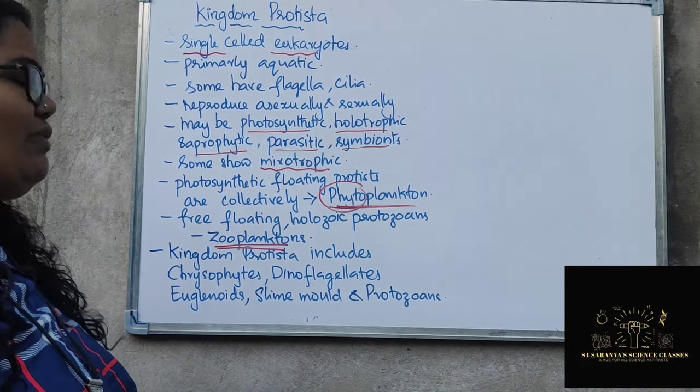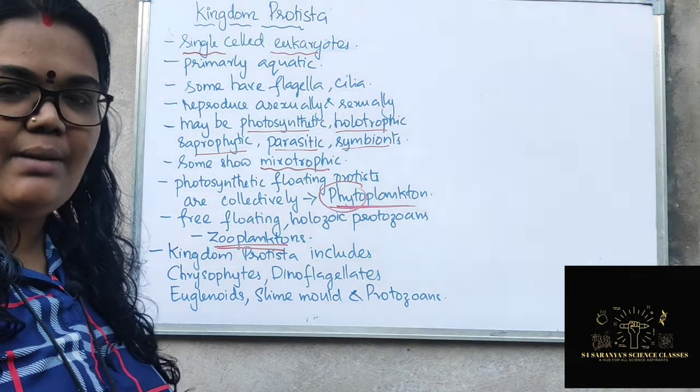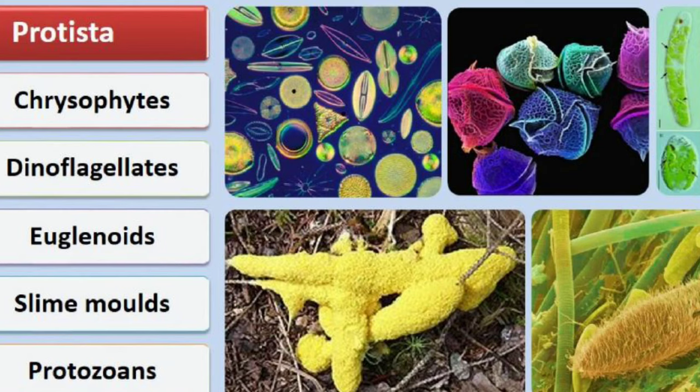Kingdom Protista is further classified into: Chrysophytes, Dinoflagellates, Euglenoids, Slime molds, and Protozoans. Today we are going to discuss Chrysophytes first.